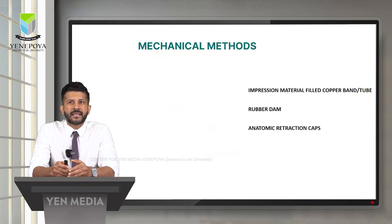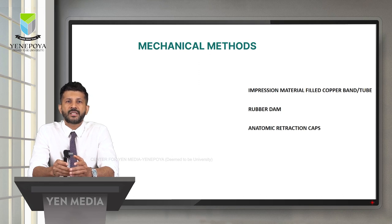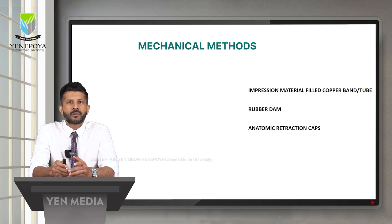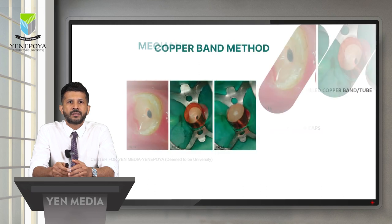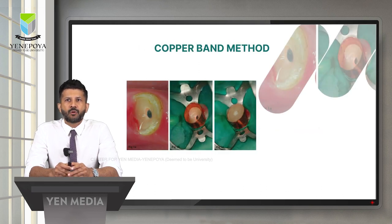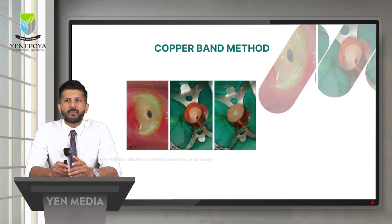Mechanical methods involve physically retracting and displacing the soft tissue, making space for the impression material to reach the recess of the sub-gingival preparation as well as providing hemostasis. Three techniques can be used: impression material filled with a copper band and tube, rubber dam, and anatomic retraction caps. In the copper band method, a copper band or ring is filled with modeling compound or elastomeric impression material and seated on the prepared tooth along the path of insertion. This method physically displaces the tissue, which stays retracted when the copper band is removed so that the subsequent impression records the sub-gingival tooth structures.